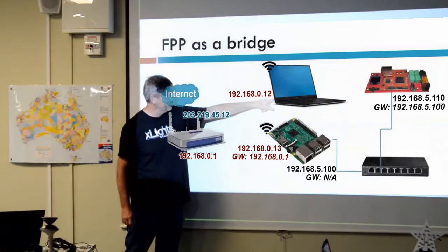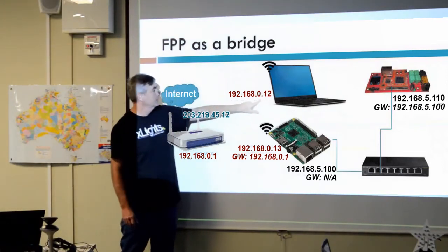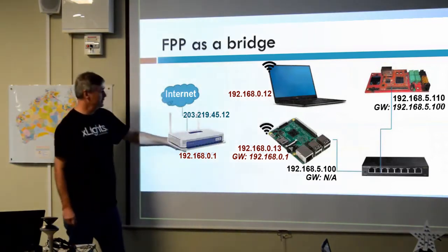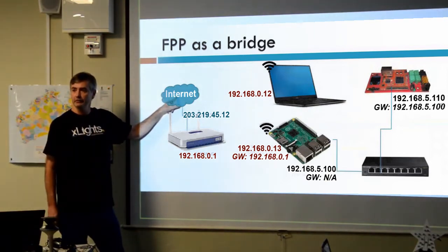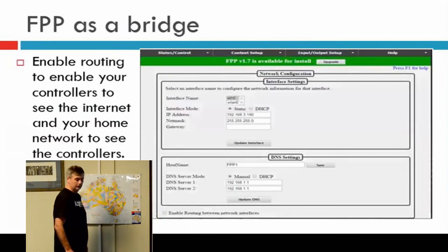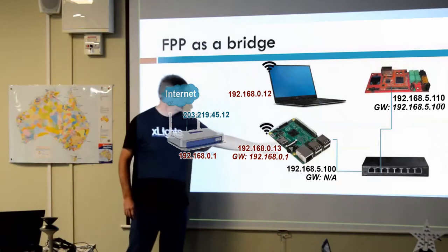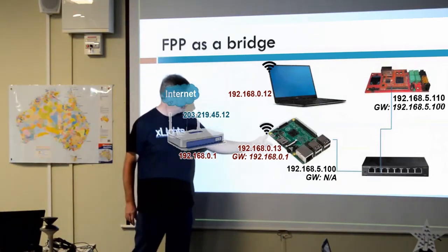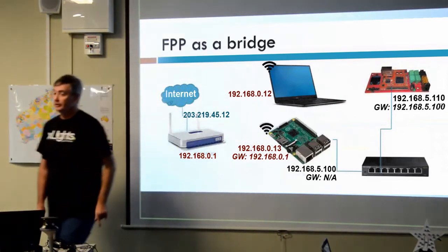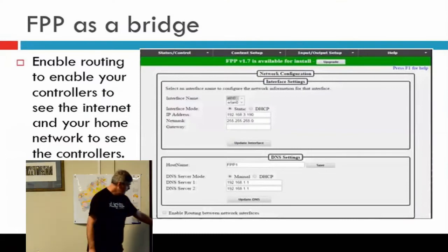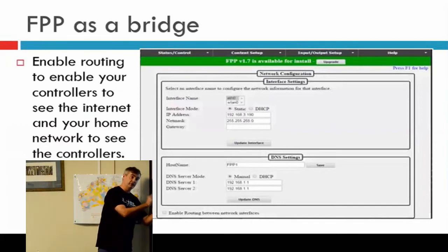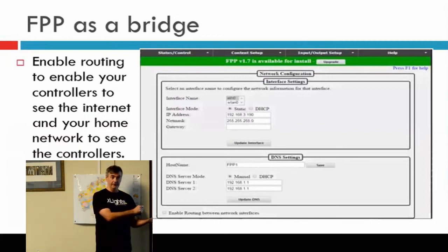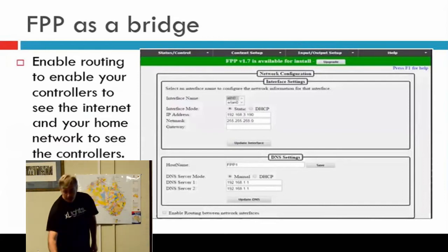When you try to access 192.168.5.110, that's not on your local network, so it gets sent to your gateway, which sends it out to the internet. The internet doesn't know that address and drops it. However, the Pi can act as a bridge — it's able to forward packets from the Wi-Fi side to the Ethernet side, but you've got to configure it. There's a checkbox in the network configuration page: enable routing between network interfaces. When you turn that on, the Pi can pass packets from Wi-Fi to Ethernet and back. But that's not enough.